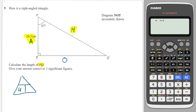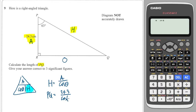I draw my triangle and I write cosine of the angle is A over H. And because I'm looking for H, it means I cover up that part of the triangle, and that tells me that H is equal to A over cosine of the angle. So substituting in: H is PQ, which is what we're looking for, and A is 24.3, over cosine of the angle, which is 63. I go to my calculator and type 24.3 over cosine of 63, and it gives me 53.5.